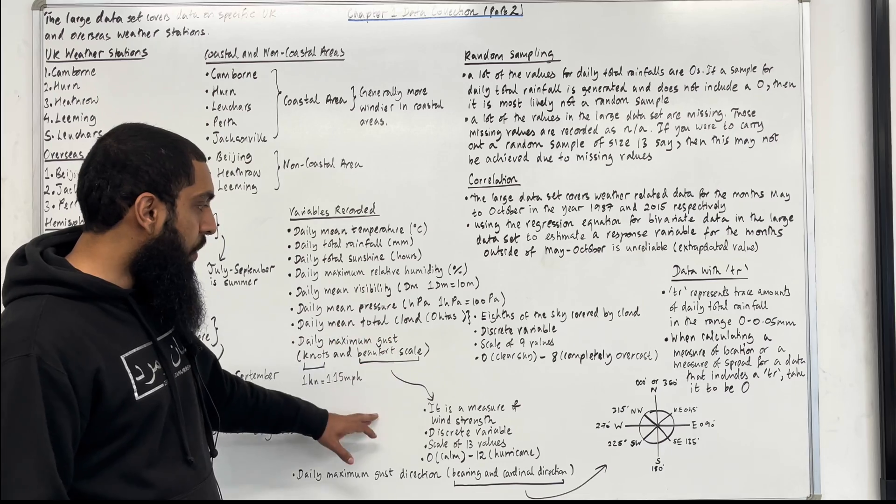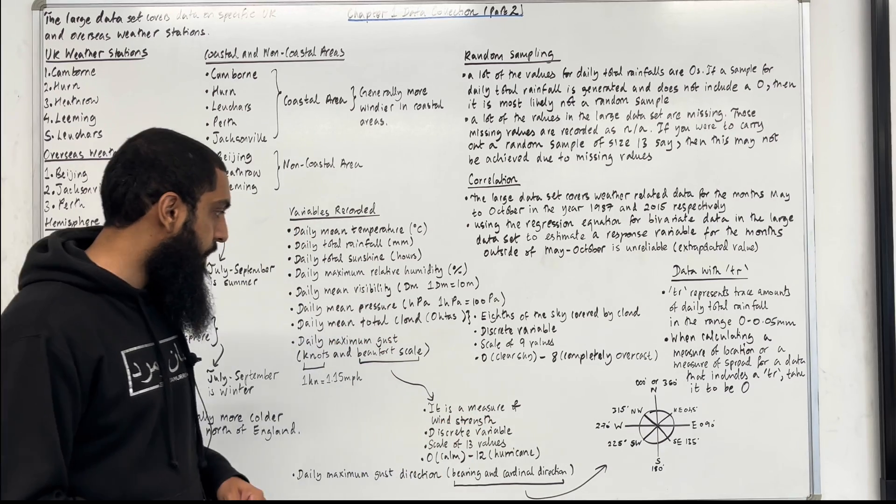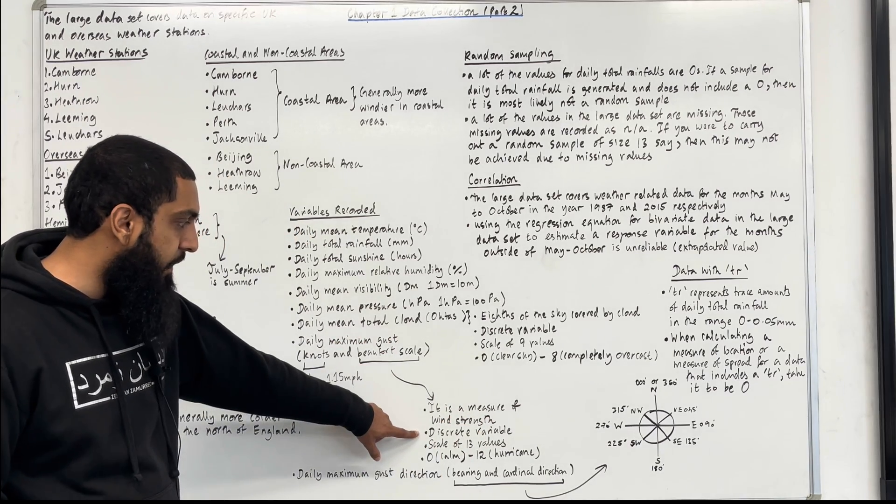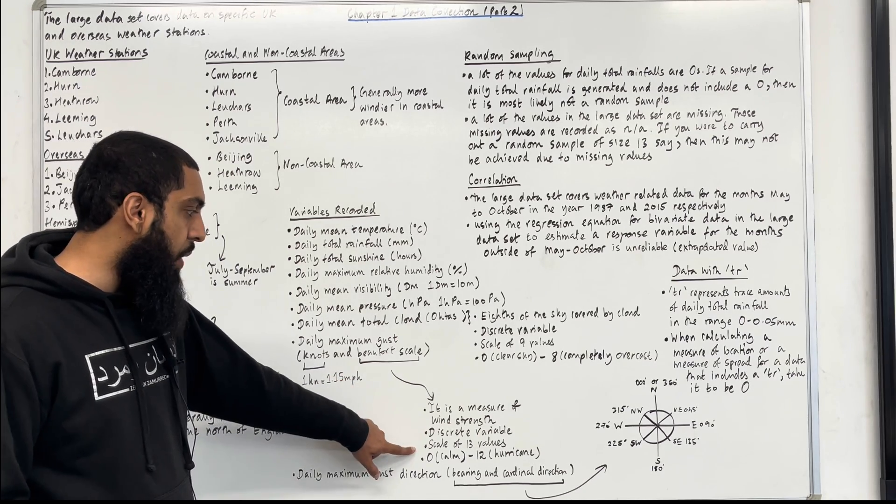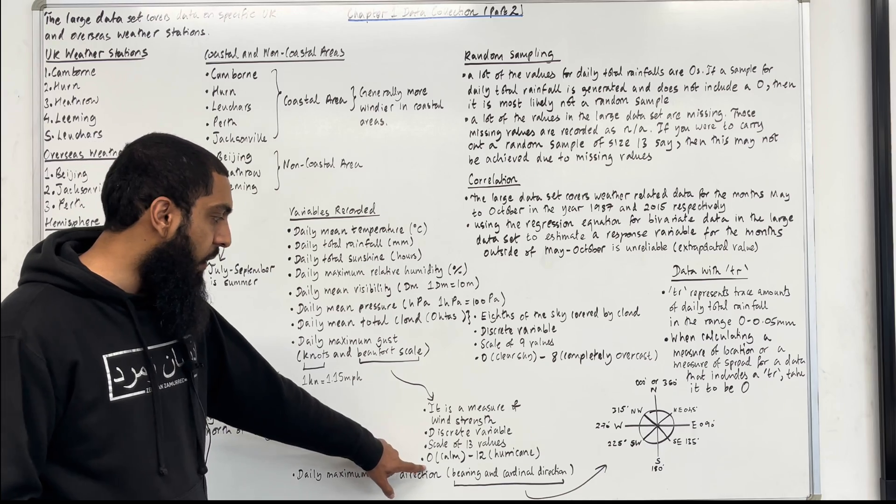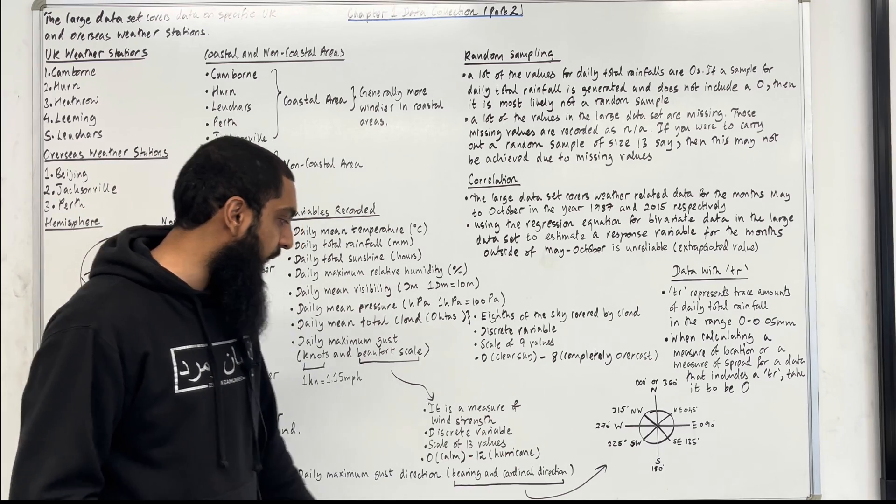The Beaufort scale measures the wind strength. The Beaufort scale is a discrete variable taking on finite number of values. The Beaufort scale is a scale of 13 values. Zero represents calm, 12 represents a hurricane.